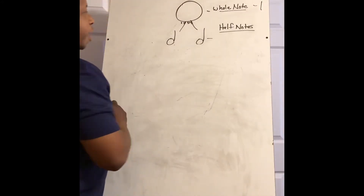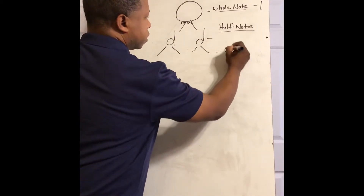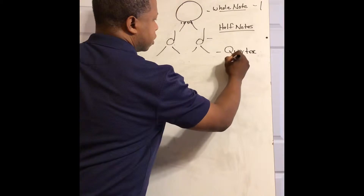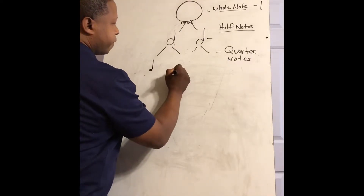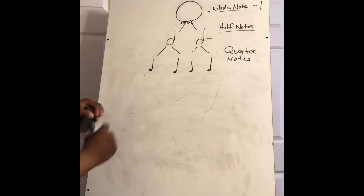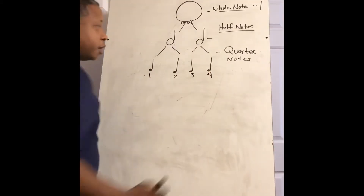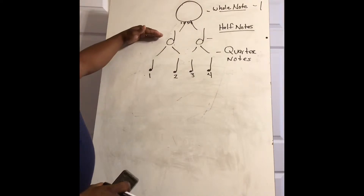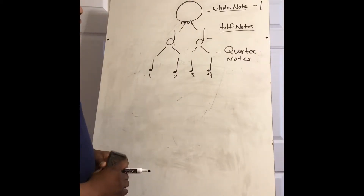The next tier after that would be what you call the quarter notes. And there they are right here like this. Hopefully you can see the pyramid growing. In counting-wise, you have beat one, beat two, beat three, and beat four. Two quarter notes equal one half note. One, two, three, four. These are quarters.